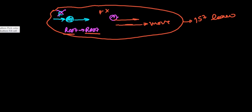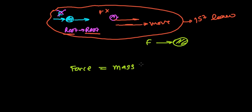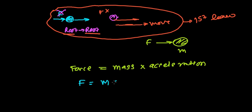Newton's second law of motion states that if I apply a certain force to an object, then the amount of that force is equivalent to the mass of the object times the acceleration gained by that object. So force is equivalent to mass times acceleration, and in short we write F equals M times A.